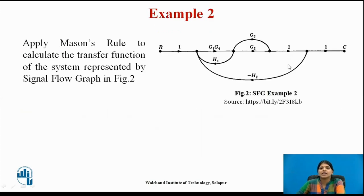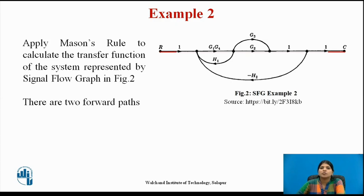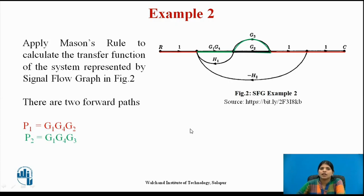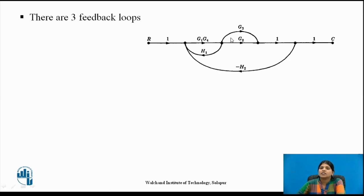Consider this example and apply Mason's rule to calculate the transfer function of the system represented by the signal flow graph in Figure 2. There are two forward paths: P1 = g1·g4·g2, and P2 = g1·g4·g3. There are three feedback loops. Loop gain L1 = g1·g4·h1, L2 = −g1·g4·g2·h2, and L3 = −g1·g4·g3·h2.